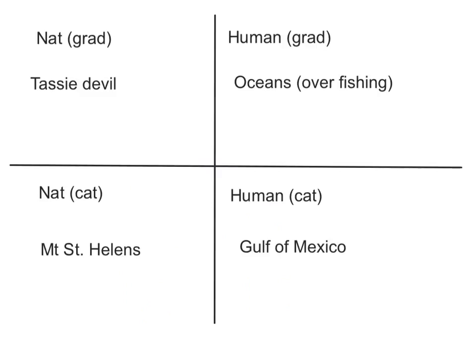For natural gradual stress, we look at the Tasmanian devil. The human gradual stress example is our oceans, especially through overfishing. A natural catastrophic example is Mount St. Helens, still a great sample study. The human catastrophic example is the oil spill in the Gulf of Mexico, though you could also look at the Exxon Valdez oil spill.